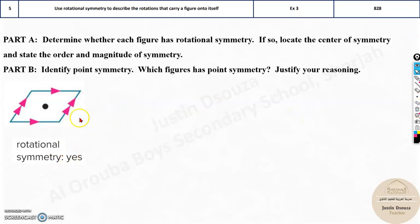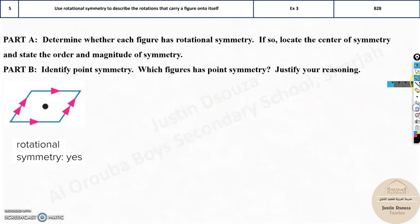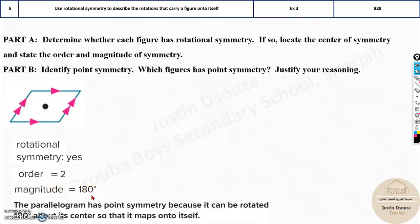So this has rotational symmetry. The order is two because, at 180 degrees, yes, one order is done. If you do it again, at 360 you will get one more. So there are two orders, two times it can be shaped when you rotate by 360. So if it's two times, that means the magnitude is 180 degrees. If the magnitude is 180 degrees, it has point symmetry because it maps onto itself at 180 degrees.